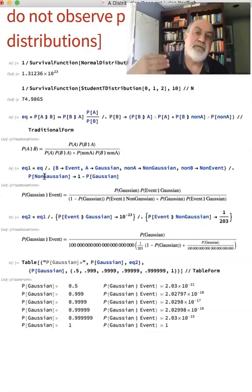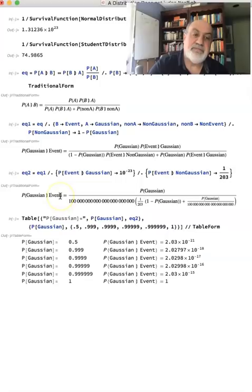If you have a prior probability being Gaussian, and then we run this and look at the table, we get: if your prior probability that it's only 50% chance that the data is Gaussian, you get something to 10 to the minus 21 probability of the data being Gaussian conditional on event. And then you go up—